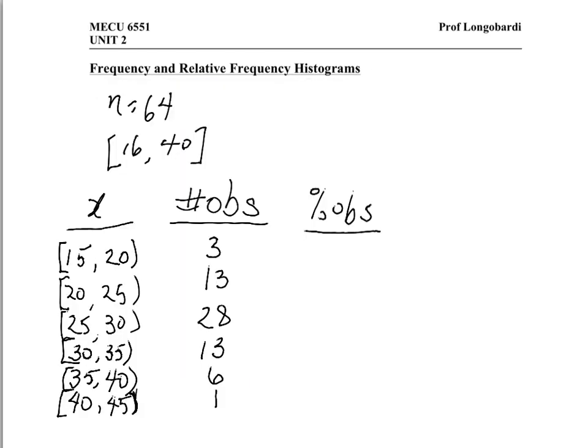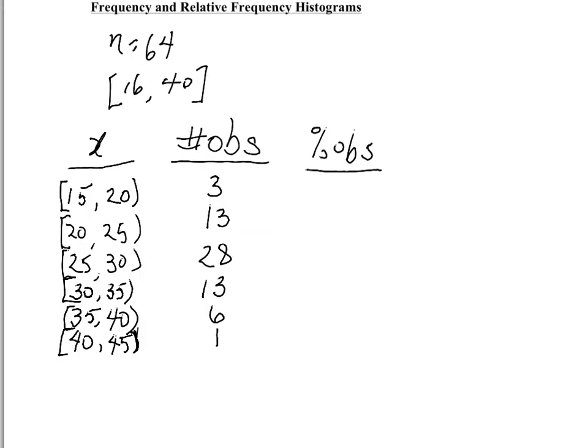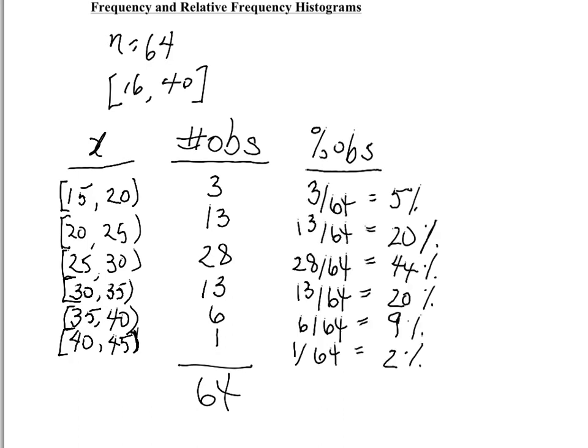So here are my counts of the observations within each class. For a total of 64 observations, if you're to add them up. So the total of 64. To compute the percentage of observations in each class, we want to figure out what percentage falls out of 64 in the first class, what percentage of 64 falls into the second class, and so on. So here are the percentages for a total of 100%.